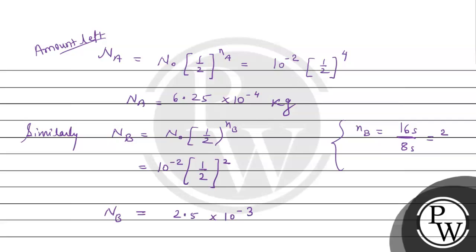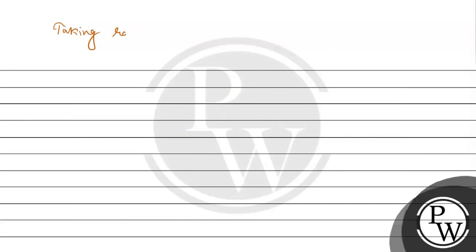Now we have N_A and N_B, so the ratio N_A by N_B is 6.25 into 10 to the power minus 4 divided by 2.5 into 10 to the power minus 3. Just solve it and you will get 25 upon 100.